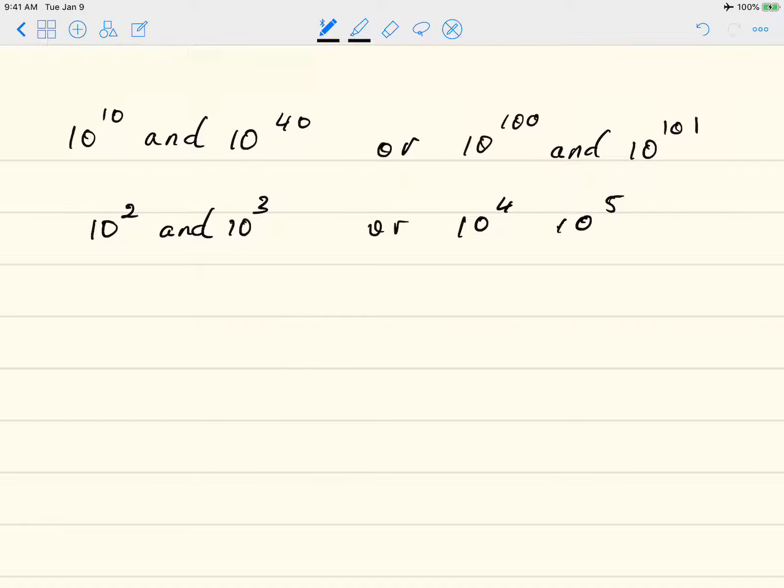So the common mistake is to subtract the powers. So you say 10 to the 3rd minus 10 to the 2nd. So you just subtract the powers, and you get 10 to the 1, which is just 10.